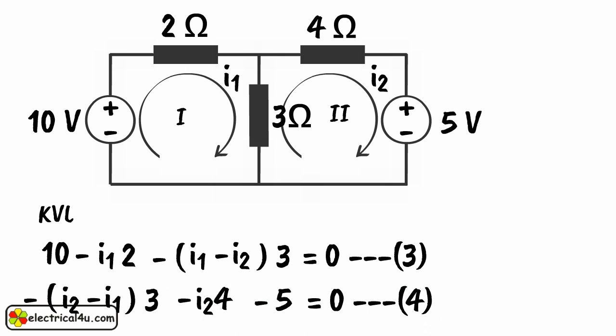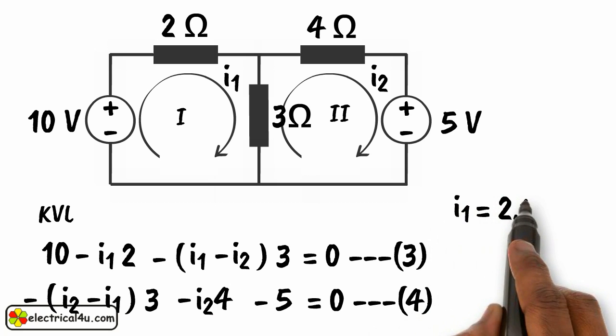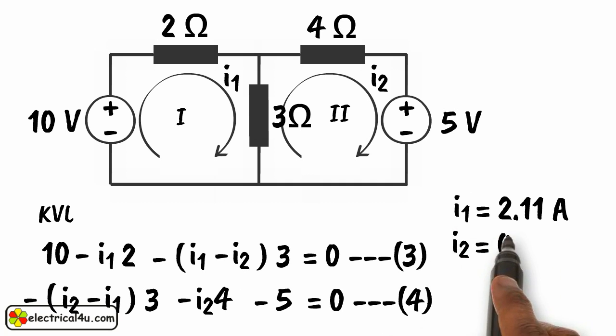Solving equation 3 and 4, we get I1 equals 2.11 ampere, I2 equals 0.192 ampere.